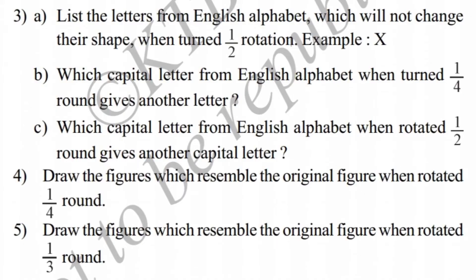B — which capital letter from the English alphabet, when turned 1 by 4 round, gives another letter? One letter when turned 1 by 4 gives another letter — for example N: looking at N, when turned 1 by 4, it becomes Z.